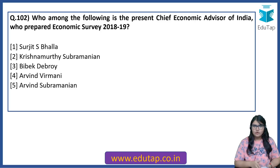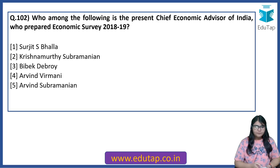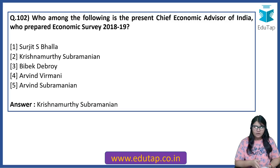The first question for today: we will be finishing the month of July 2019 and then take up June 2019. Who among the following is the present Chief Economic Advisor of India who prepared Economic Survey 2018-19? The answer is Krishnamurthy Subramanian. He is the one who is the present Chief Economic Advisor and prepared the Economic Survey 2018-19.